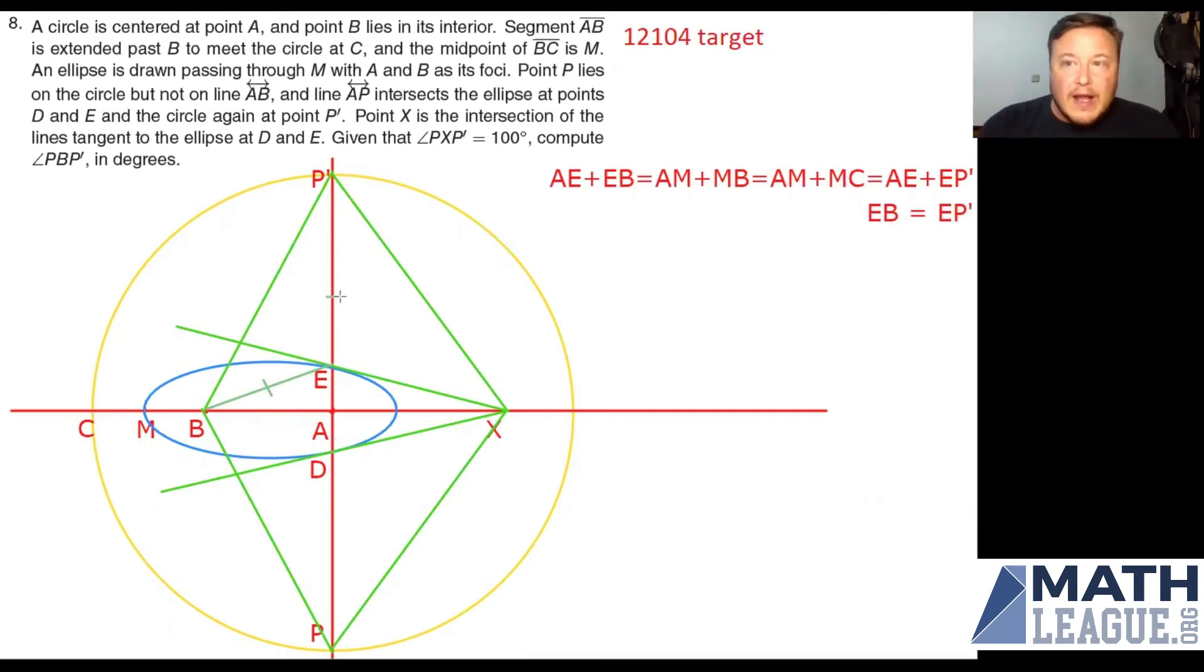So EB is the same length as EP prime. Now that helps us quite a bit because we've got ourselves an isosceles triangle here. EP prime B is an isosceles triangle. There's one other fact about ellipses that I want to take advantage of.